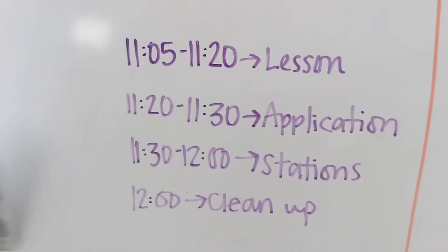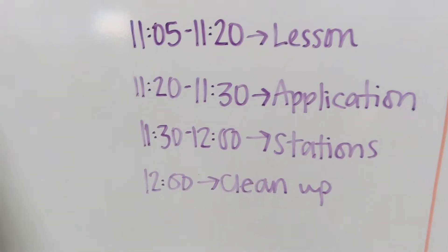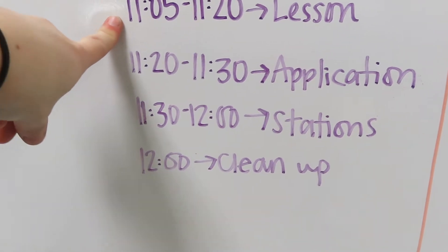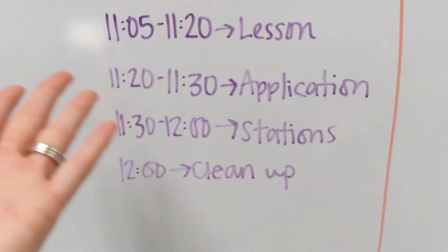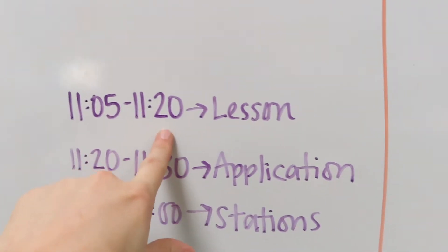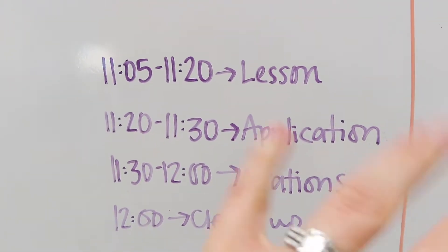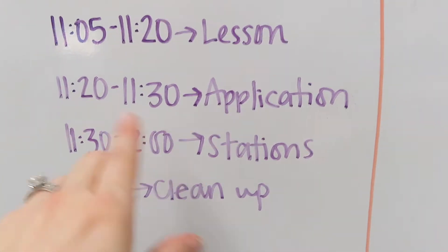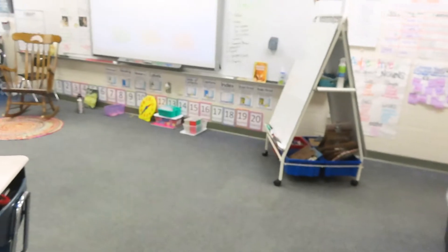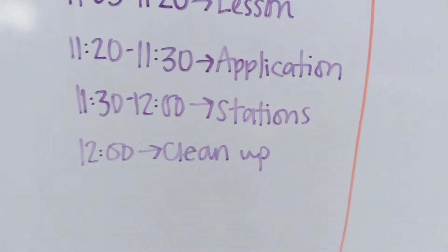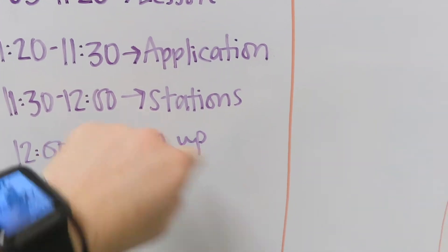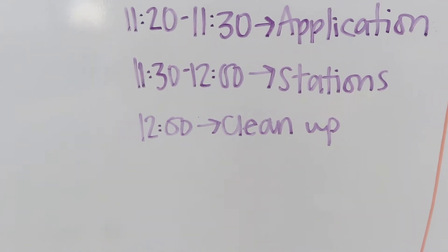Here's how my math time is planned out daily. Math runs from 11:05 to 12:05, but we have lunch at 12:05 so I usually end at 12:00. From 11:05 to 11:20 I teach a lesson — sometimes a mini lesson, sometimes shorter or longer depending on the material, but that's about 15 minutes. Then from 11:20 to 11:30 is application time — about 10 minutes where students sit on the floor, practice problems from what I just taught, and my co-lab teacher and I walk around to check. Then students go to their stations from 11:30 to 12:00 — a 30-minute station block.